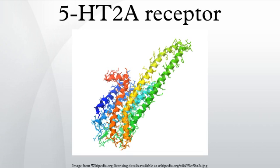Ligands - Agonists: Activation of the 5-HT2A receptor is necessary for the effects of the classic psychedelics like LSD, psilocin and mescaline, which act as full or partial agonists at this receptor, and represent the three main classes of 5-HT2A agonists: the ergolines, tryptamines and phenethylamines respectively. A very large family of derivatives from these three classes has been developed, and their structure-activity relationships have been extensively researched.